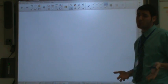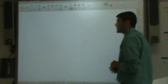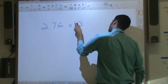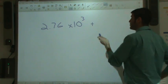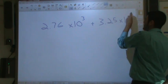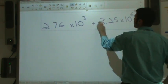So let's go ahead and take a look at addition and subtraction with scientific notation. I'm just going to do an addition problem for you, and we're going to take a look at two numbers and add them together. So let's say we have 2.76 times 10 to the third, and let's say we're going to add that to 3.25 times 10 to the sixth.